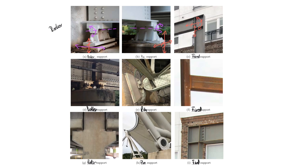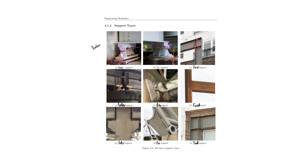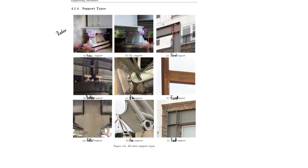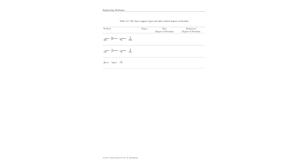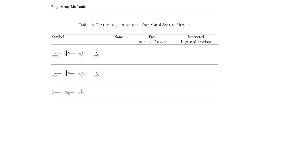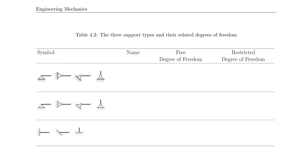Those supports provide a beautiful overview of the general support types, and now you have a clear physical interpretation. You can differentiate between the roller, the pin, and the fixed support. On the next page, I want to clarify how these are idealized by engineers on paper. Before we solve problems, we need to understand how these support reaction types are idealized, so let's take them one by one. The first row shows a variation of a roller or rocker.